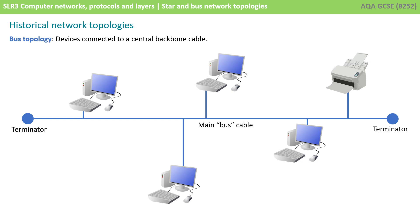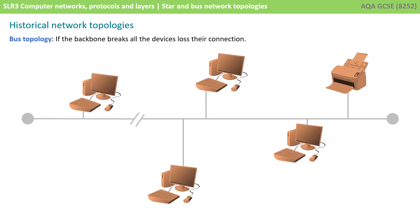Years ago, these computers would have been connected via a bus network, where you have a backbone connection and each individual PC is then connected to this backbone. One of the major disadvantages with this kind of topology is you only needed to get a break in the backbone and all the computers would lose their connection.